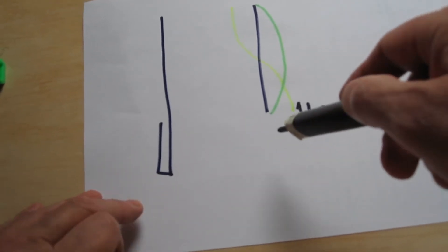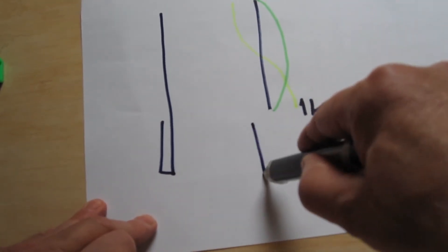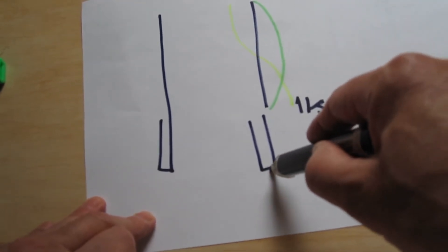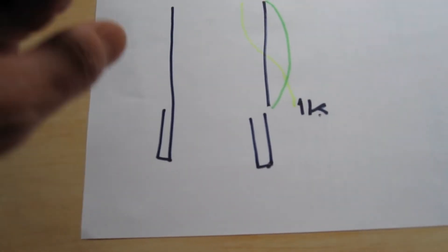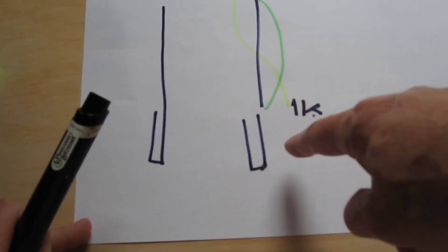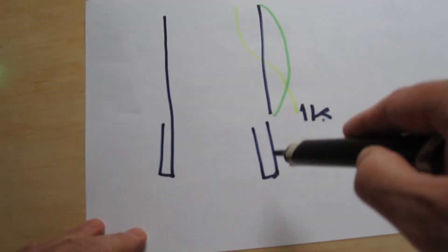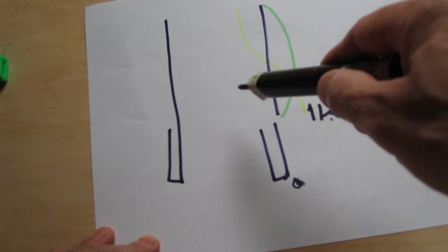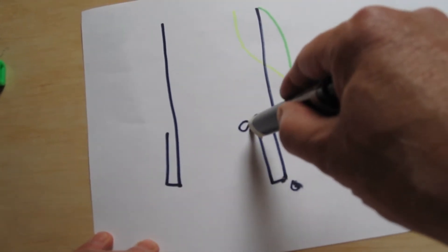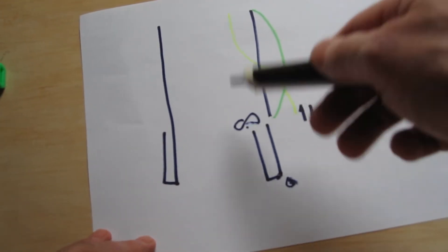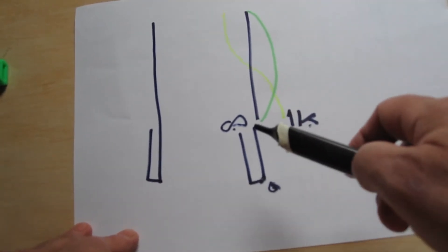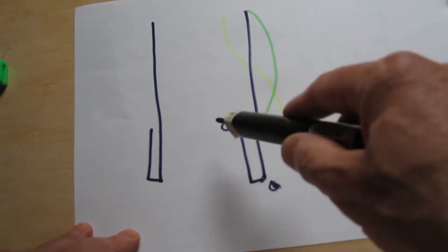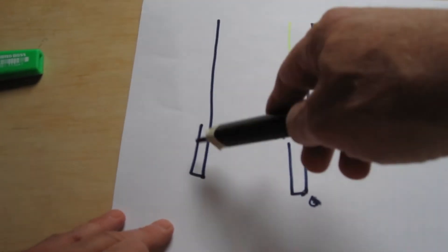So we have to match that. If you have a quarter wave step like this, and you take into account the velocity factor, then you have here zero ohms and here in theory infinite, but in practice not so high. You can connect this together, and then you have the J-Pole antenna.